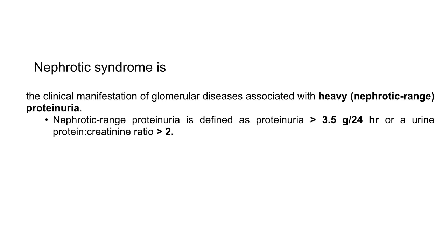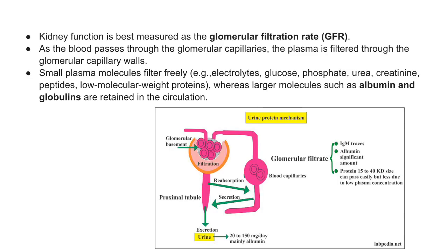Nephrotic range proteinuria is defined as more than 3.5 grams per 24 hours or a urine protein-creatinine ratio of more than 2. The primary function of the kidneys is to excrete toxic metabolites from the body, and their function is best measured as the glomerular filtration rate.